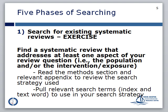As an exercise, look for a systematic review on at least one aspect of your topic — in other words, a review with the same population or a similar intervention or exposure. Identify the search strategy by looking in the methods section and any relevant appendices. Start collecting search terms including index terms and free text words from that search strategy that you can use in your own search strategy for your systematic review.